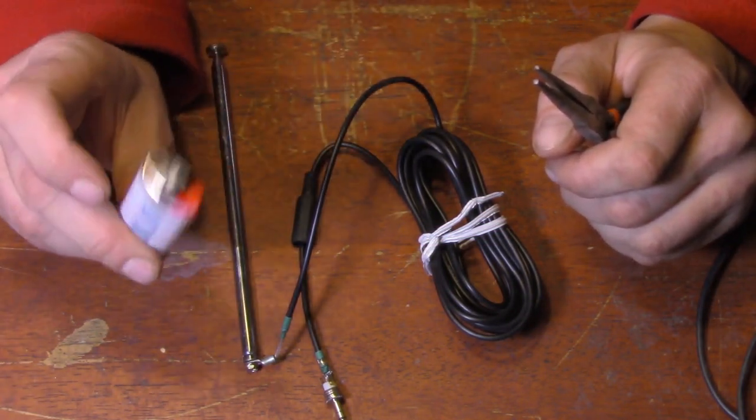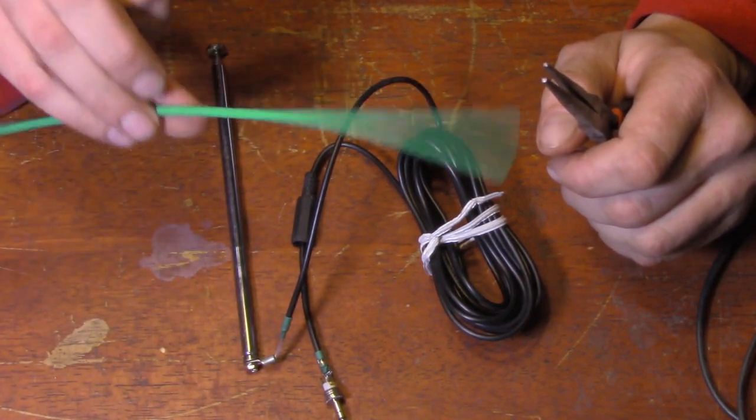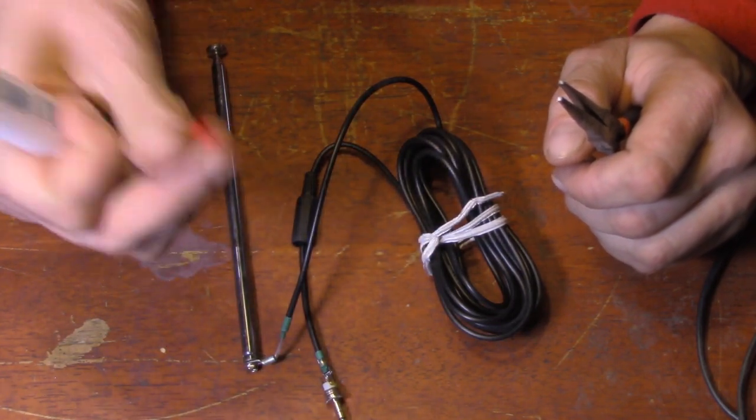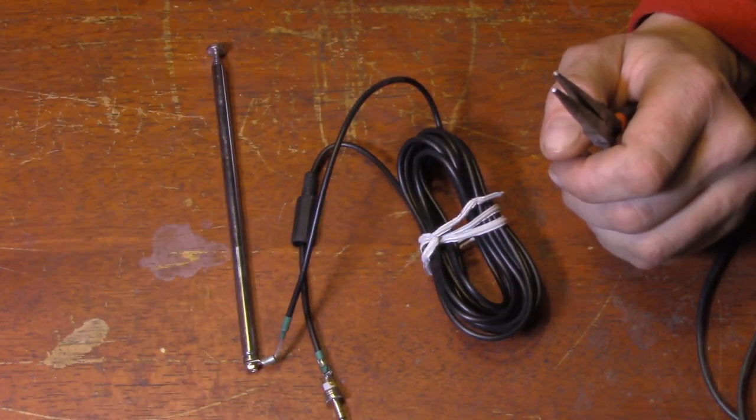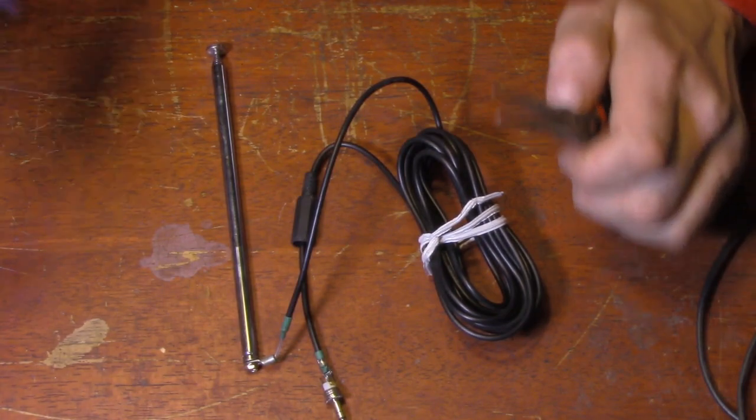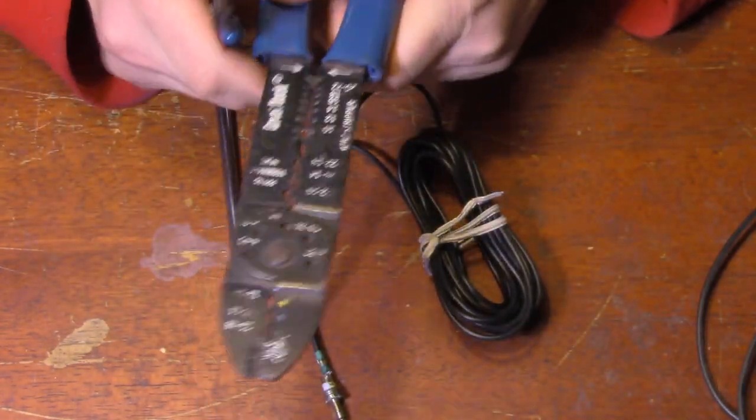Of course, for tools, a lighter or some kind of heat source for shrinking the tubing. A heat gun would work also for taking the plastic piece off the eyelet connector. For tools, you're just going to need pliers as handy, a wire cutter, and a wire stripper.